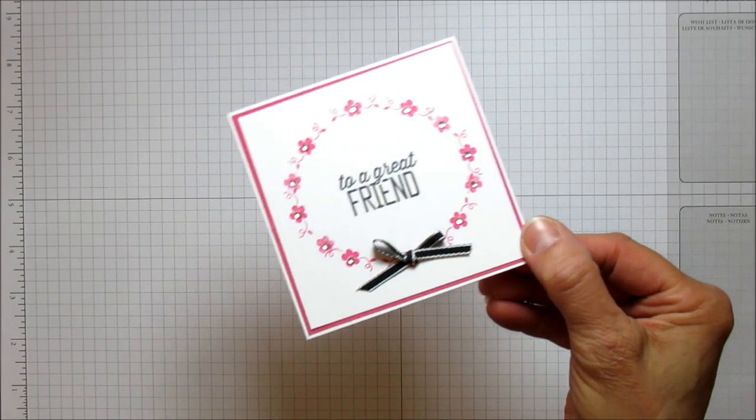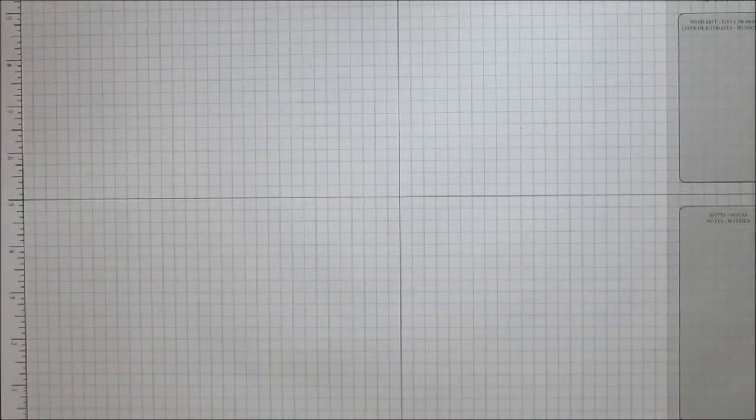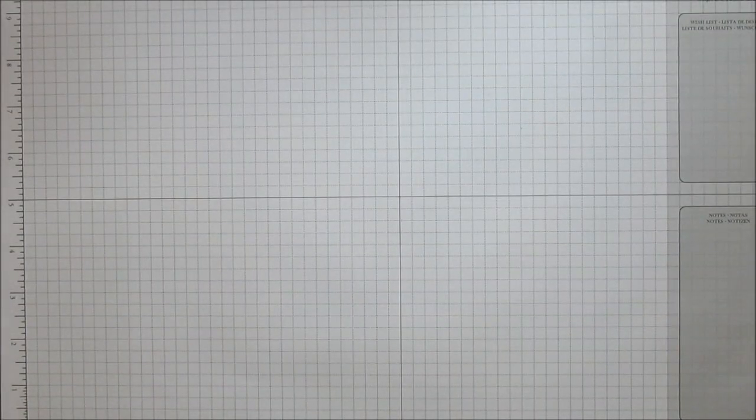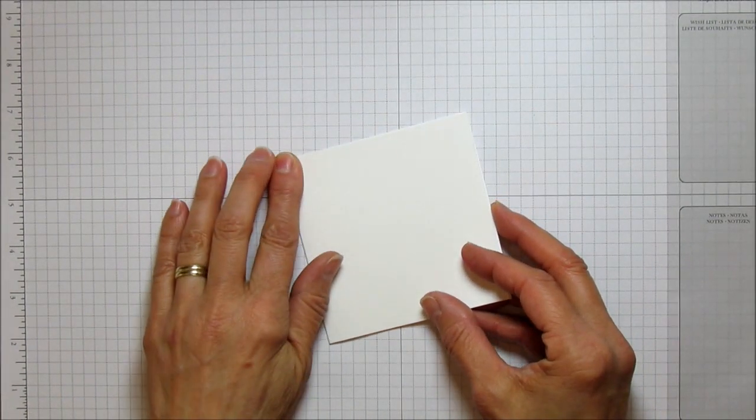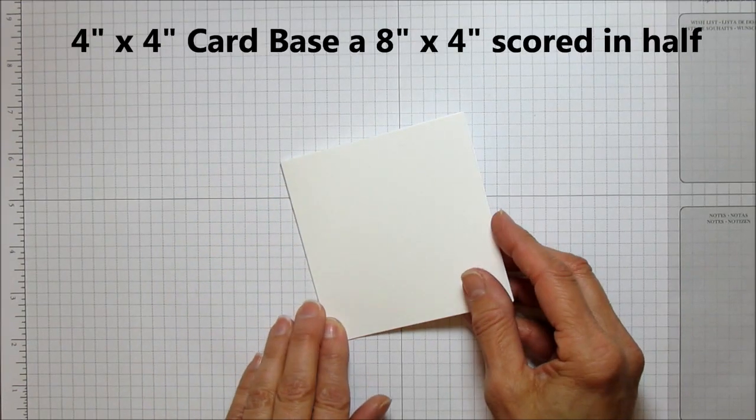Let's get started. The first thing you're going to do is you're going to need a piece—actually this is a 4x4 base and it's 8 inches by 4, then you just score it in half so you have a 4x4.